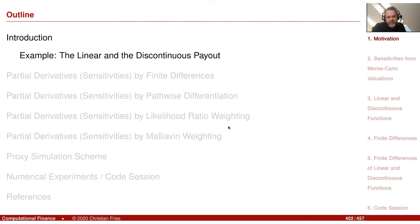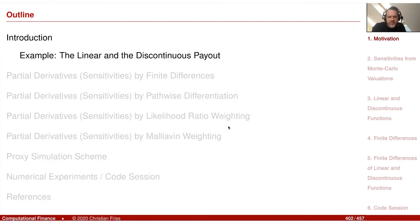So this is the program for the next session. I start with an introduction, and what you see below in gray are several methods which are general numerical methods — not specific to mathematical finance. The important part is maybe the second-to-last point on the slide, the numerical experiments. I'd like to do a code session with you where we write about 150 lines of code.